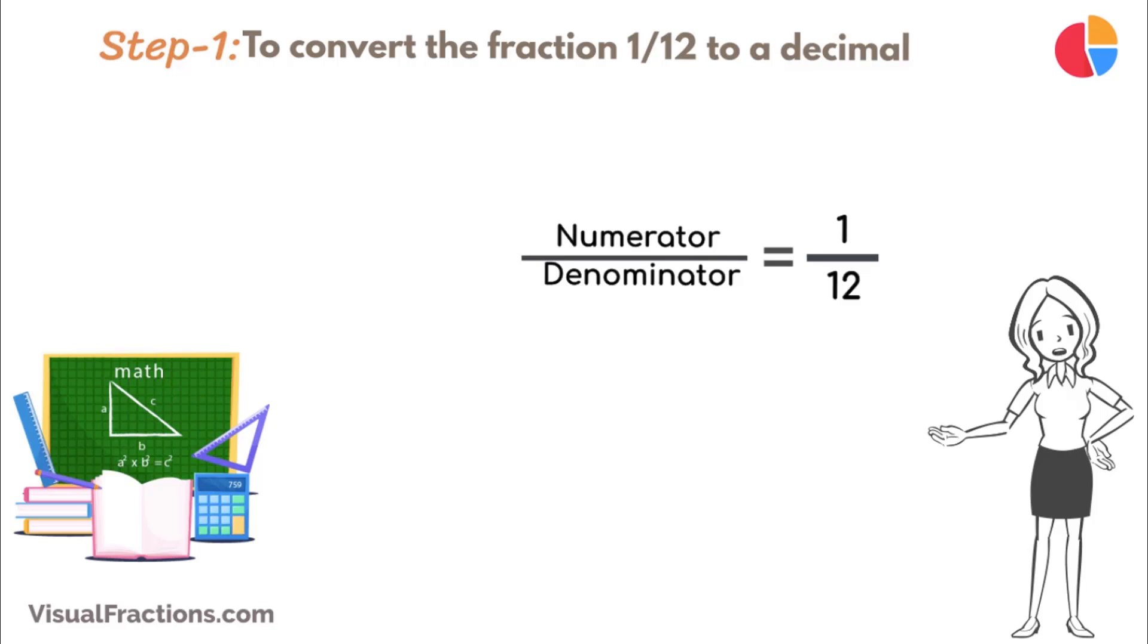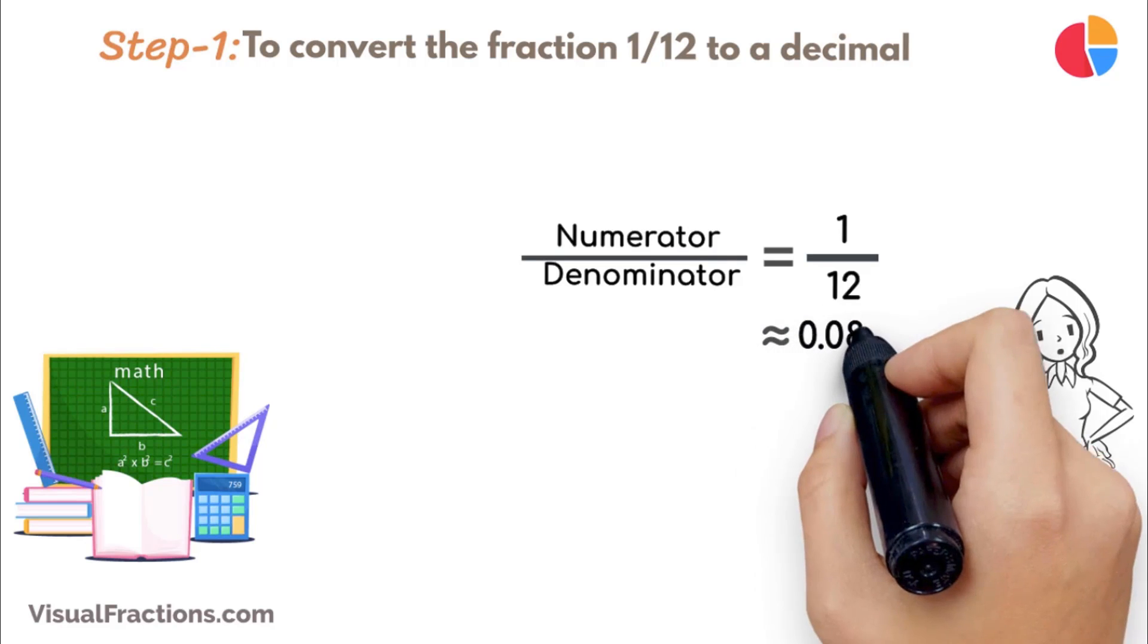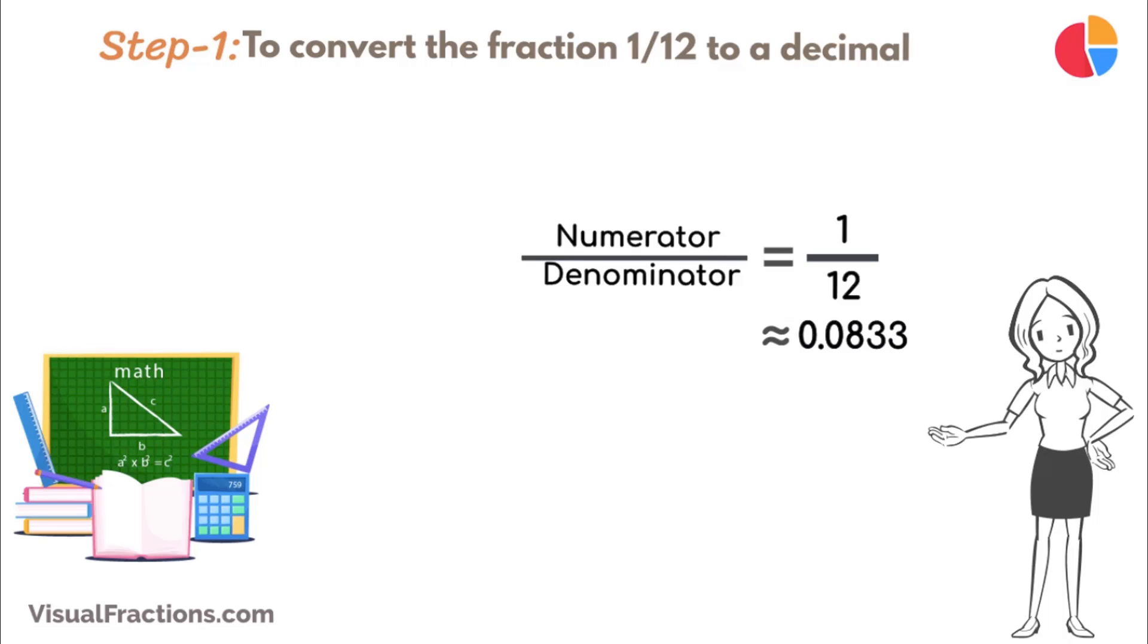Using a calculator, the answer we get is 0.0833 repeating. But let's perform this division by hand using long division.